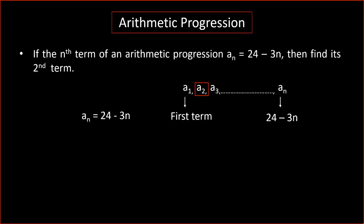Here, the nth term is an is equal to 24 minus 3n. Now, we will put n is equal to 2 in this nth term.